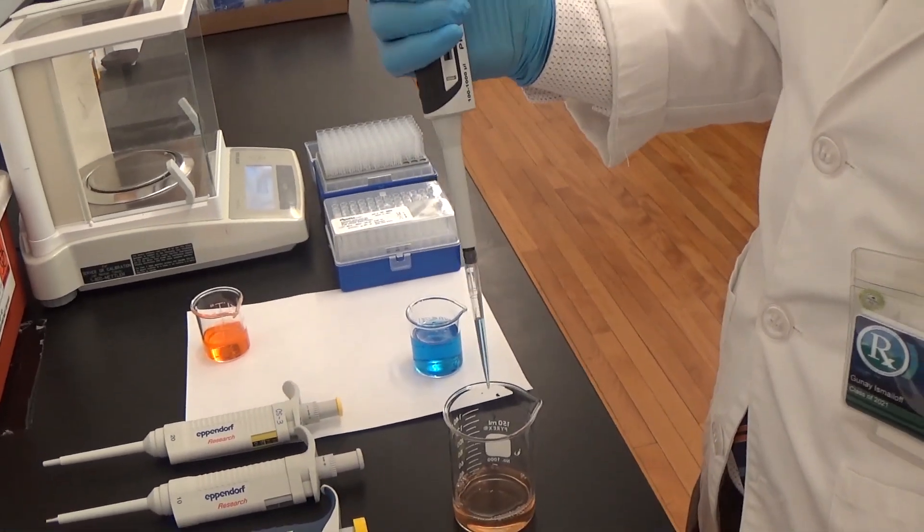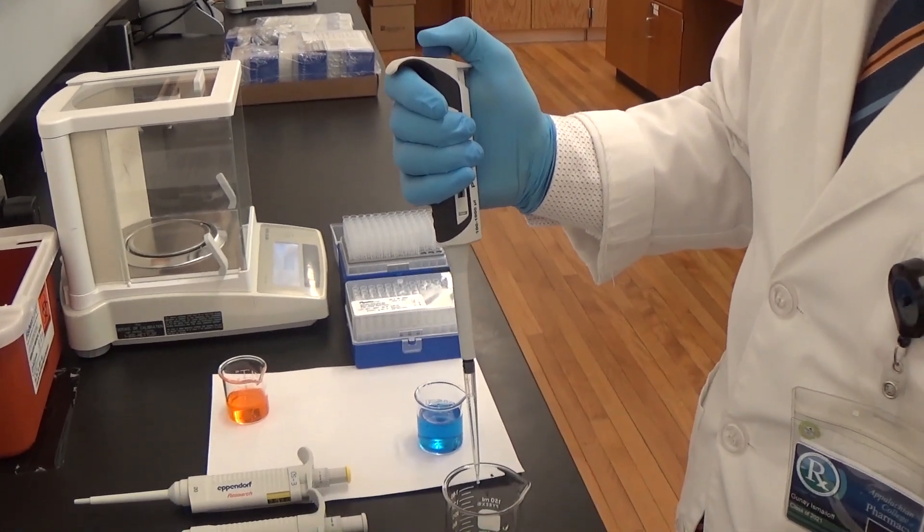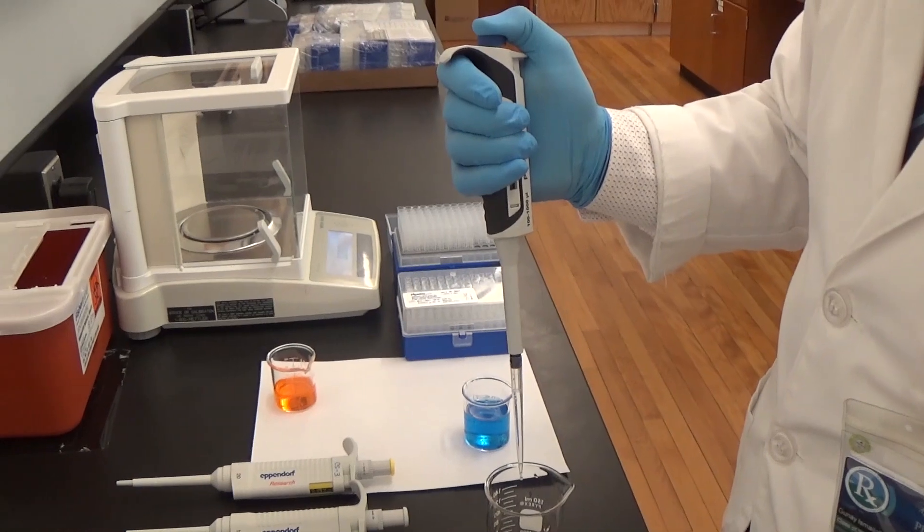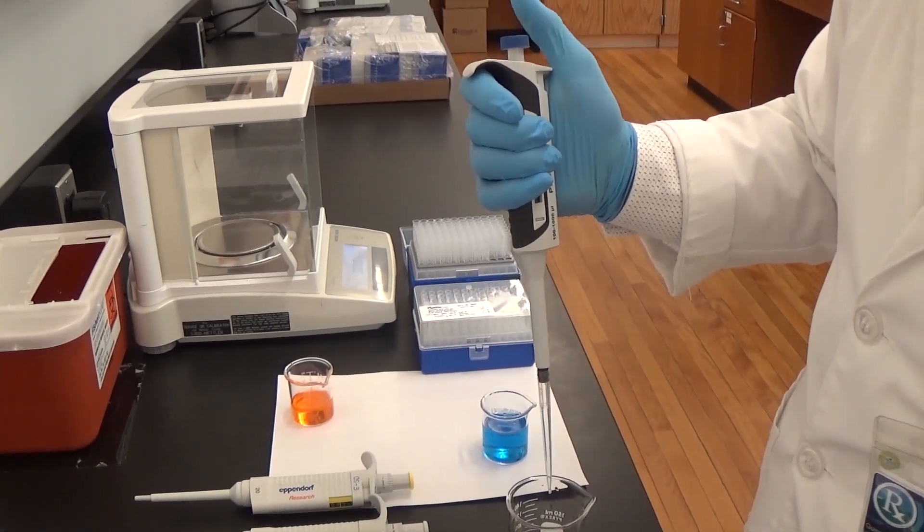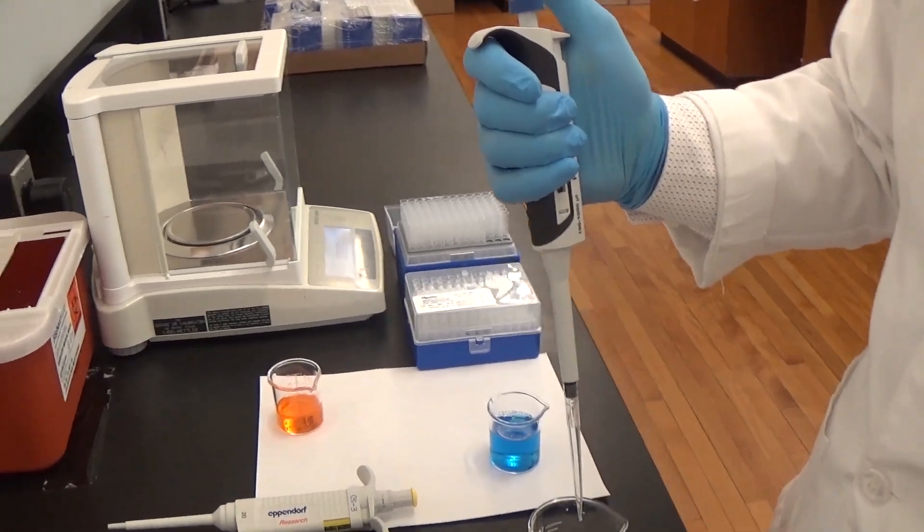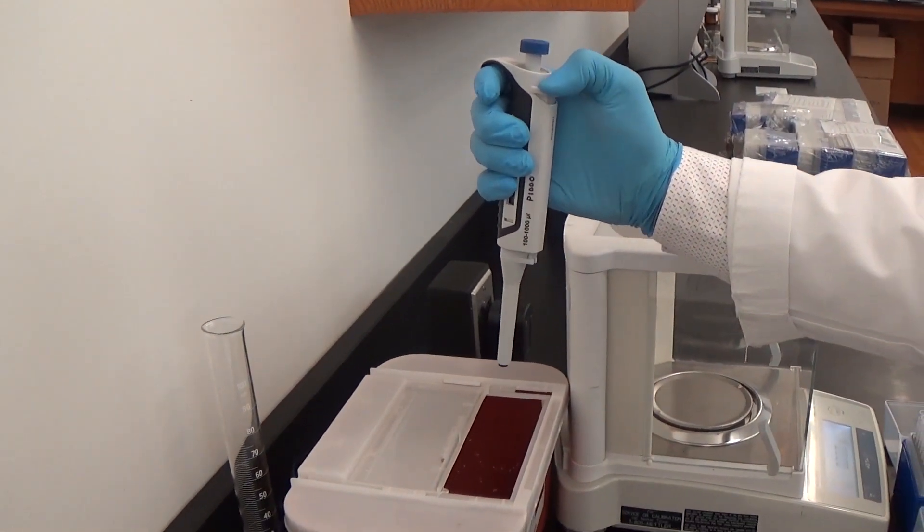Dispense the liquid by gently pressing down the plunger button to the first stop. After a short delay, press the button to the second stop to empty the tip completely. This will result in dispensing the correct volume of fluid. Tips should be discarded into the appropriate container.